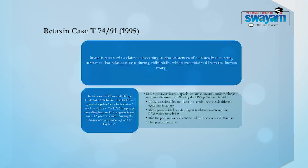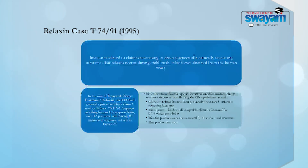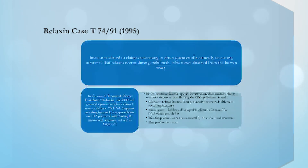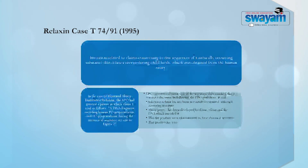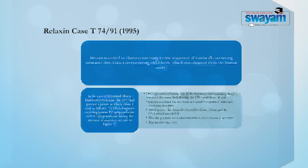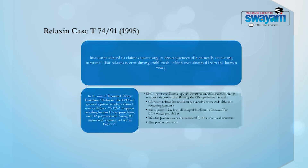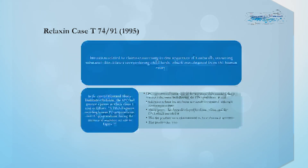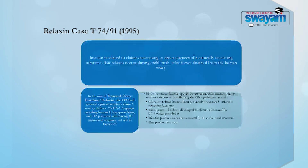The EPO had granted a patent in which claim one of the patent application read: a DNA fragment encoding human H2 pre-prorelaxin and H2 pre-prorelaxin having the amino acid sequence set out in a particular figure appended with the patent application. The EPO opposition division upheld the invention and remarked that it was not a discovery, following the EPO guidelines, noting that the substance Relaxin had not been previously recognized although occurring in nature, that a process was developed to obtain Relaxin and the DNA which encoded it, the products were characterized by their chemical structure, and the product has a use.